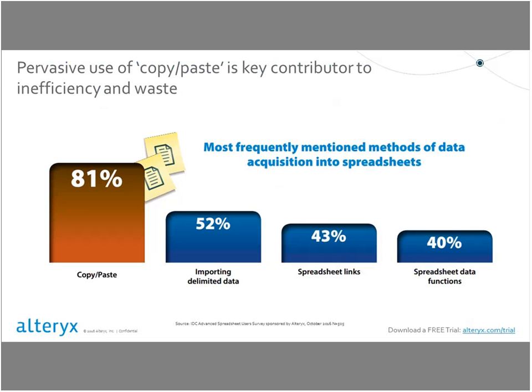So how can we become more efficient? It starts with some of the basic techniques people use when beginning work with data. One of the first things people do when they begin working with data in spreadsheets is make a copy of that data and paste it into a spreadsheet — sometimes because you don't want to lose the original, sometimes because it's the path of least resistance. But copying and pasting data from the source into a spreadsheet is one of the biggest wastes in working with data.